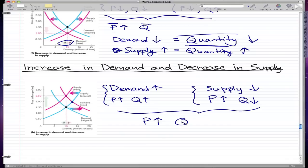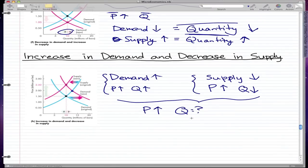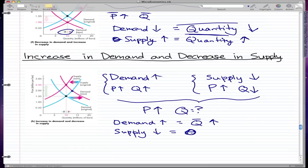So the quantity is actually uncertain. I need numbers, but if you don't give me numbers, I'll give you a question mark because I don't know where the quantity is going to go. If the demand rises more, then the equilibrium quantity will rise more. But if the supply decreases more, then the equilibrium quantity decreases more.